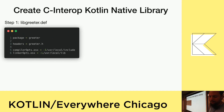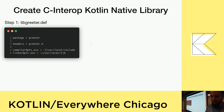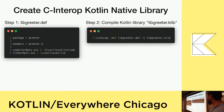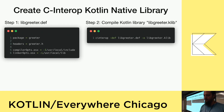So let's go ahead and compile this to create our klib file. We run cinterop, we pass in the dash def option with our def file, and then we specify dash o for output and we get our libgreeter.klib. That libgreeter.klib will have a reference back to our original shared library that we want to use.